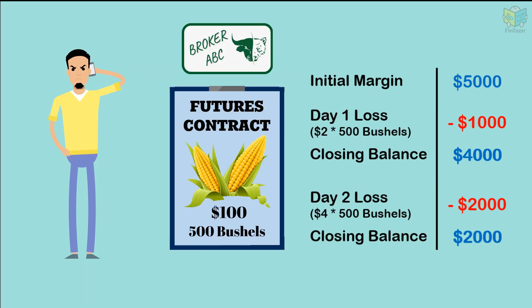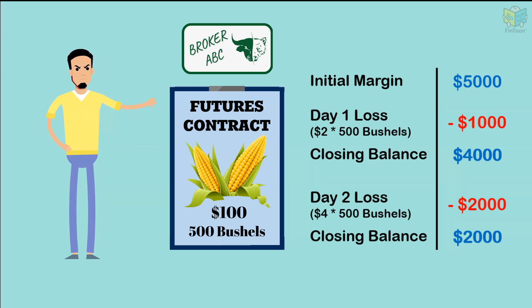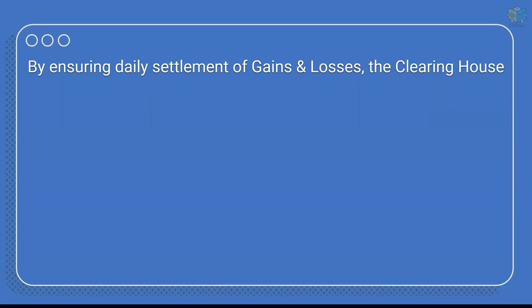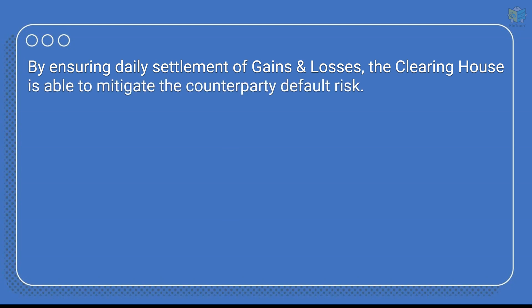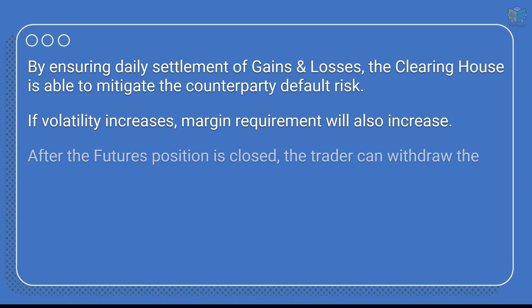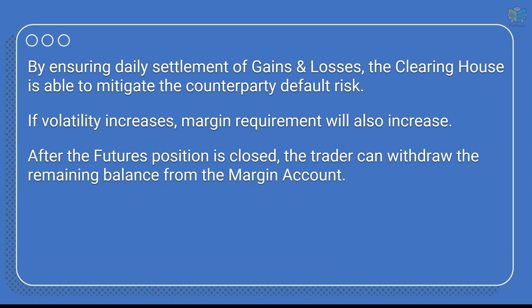If the trader does not deposit these additional funds after receiving the margin call, the broker will automatically close or liquidate the position in order to prevent additional losses. By ensuring daily settlement of profits and losses, the clearing house is able to ensure that each party fulfills his obligation and no party faces the risk of default. If the daily price volatility increases, the margin requirements will also increase and vice versa. When the futures position is closed, the remaining margin money after trade settlement can be returned to the account holder.